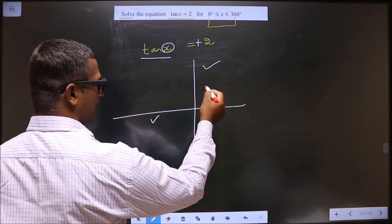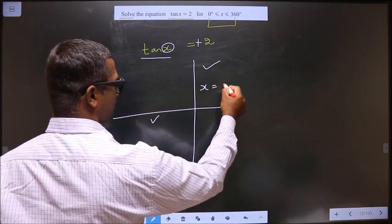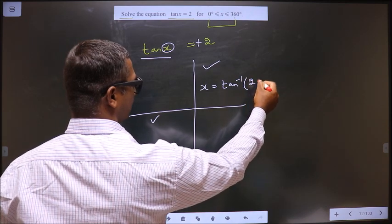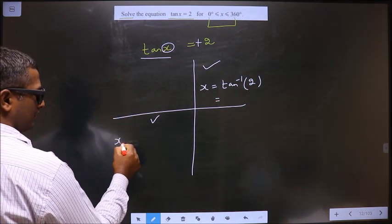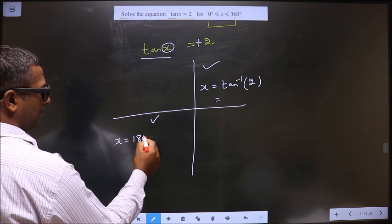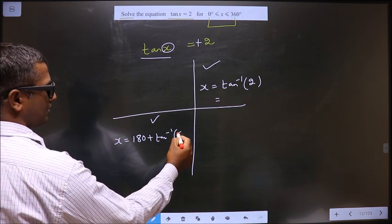So to get an angle in the first, we do directly tan inverse 2. To get an angle in the third, we do 180 plus tan inverse 2.